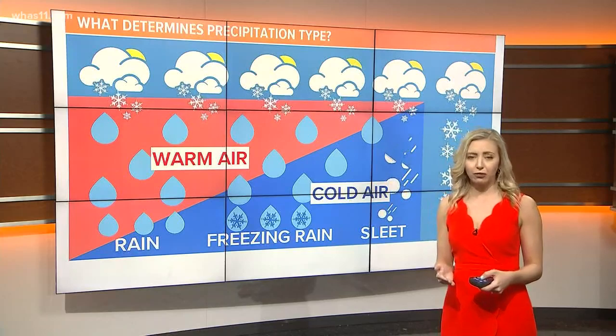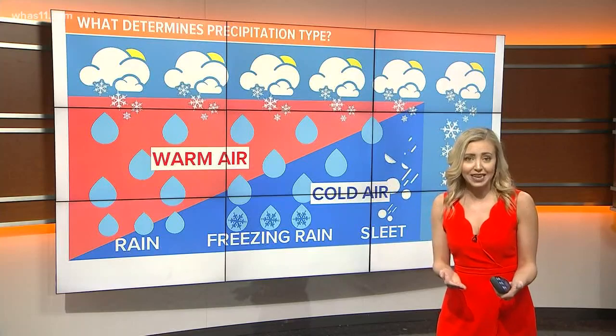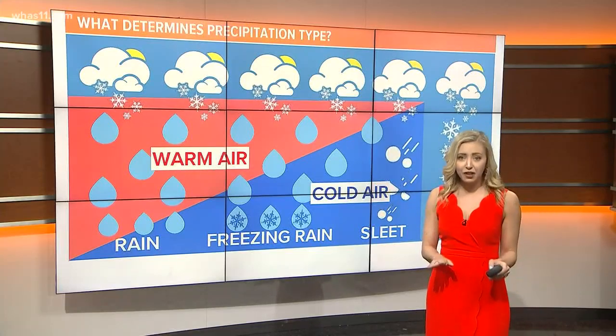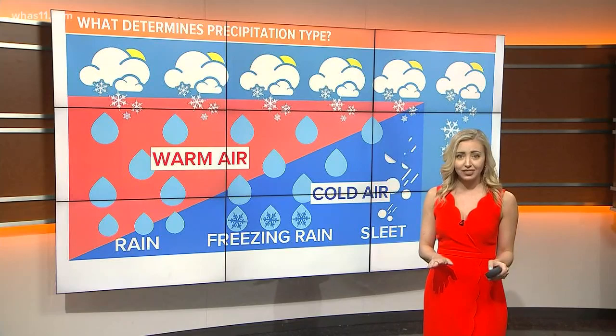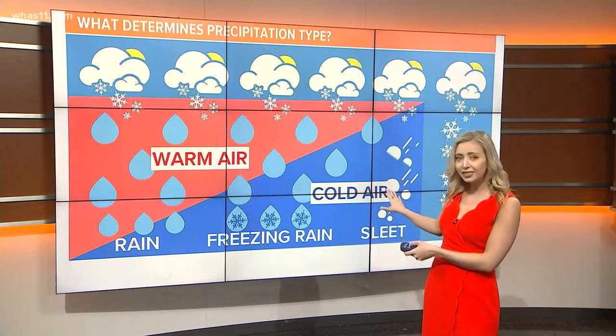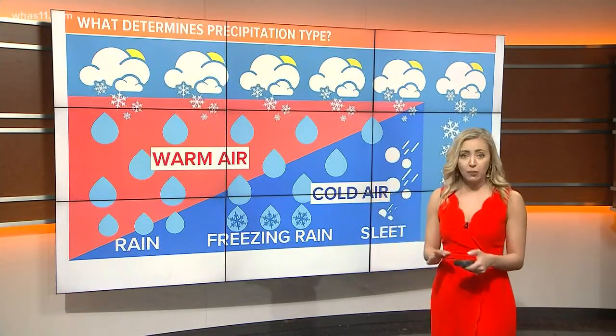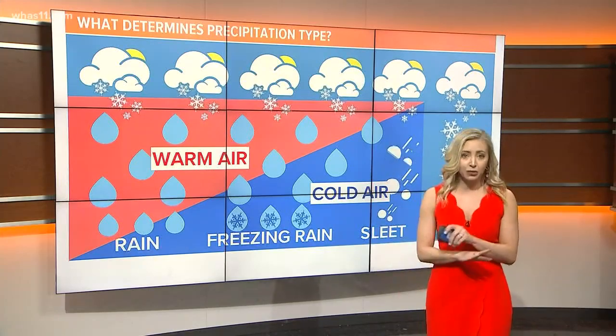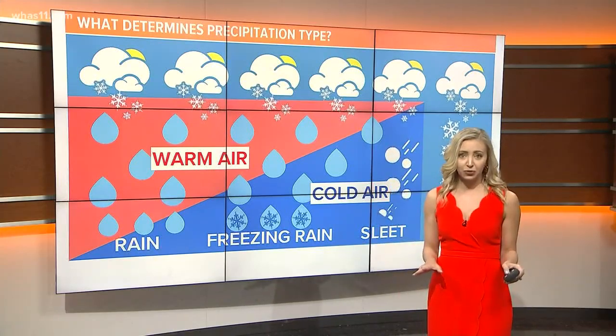If it only encounters temperatures above freezing — that would be greater than 32 degrees — it would fall as rain. Now if that droplet falls through warm air first, then hits a layer of very cold air at the surface, it can become freezing rain. The drop would begin as ice, then turn to rain, then freeze on contact with very cold ground.